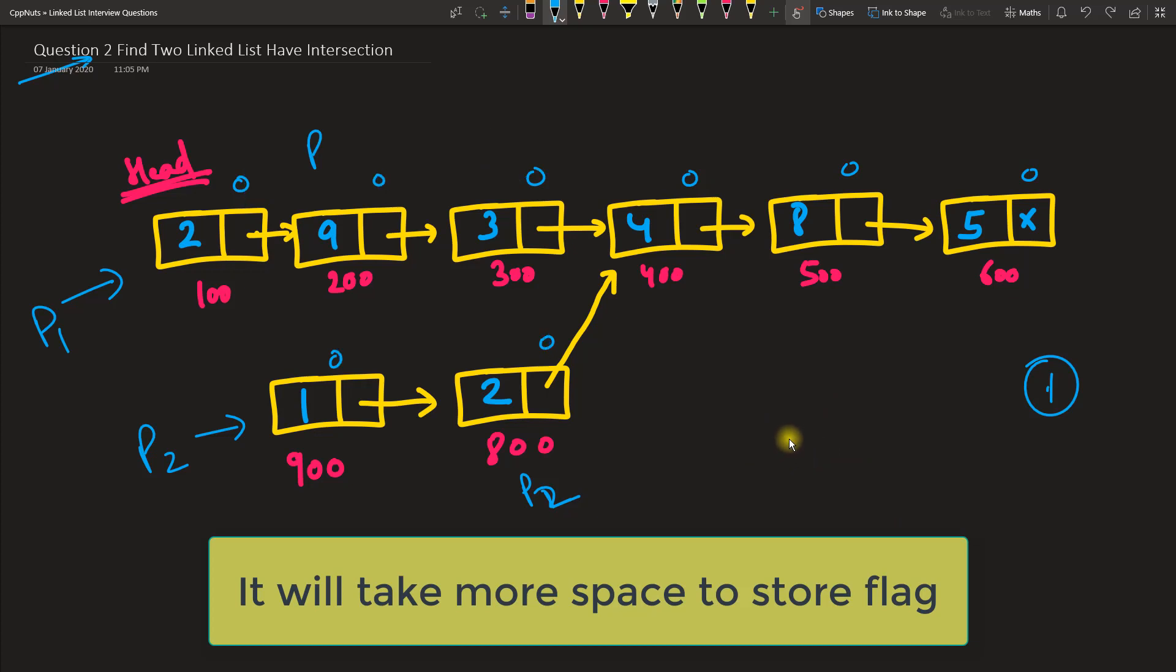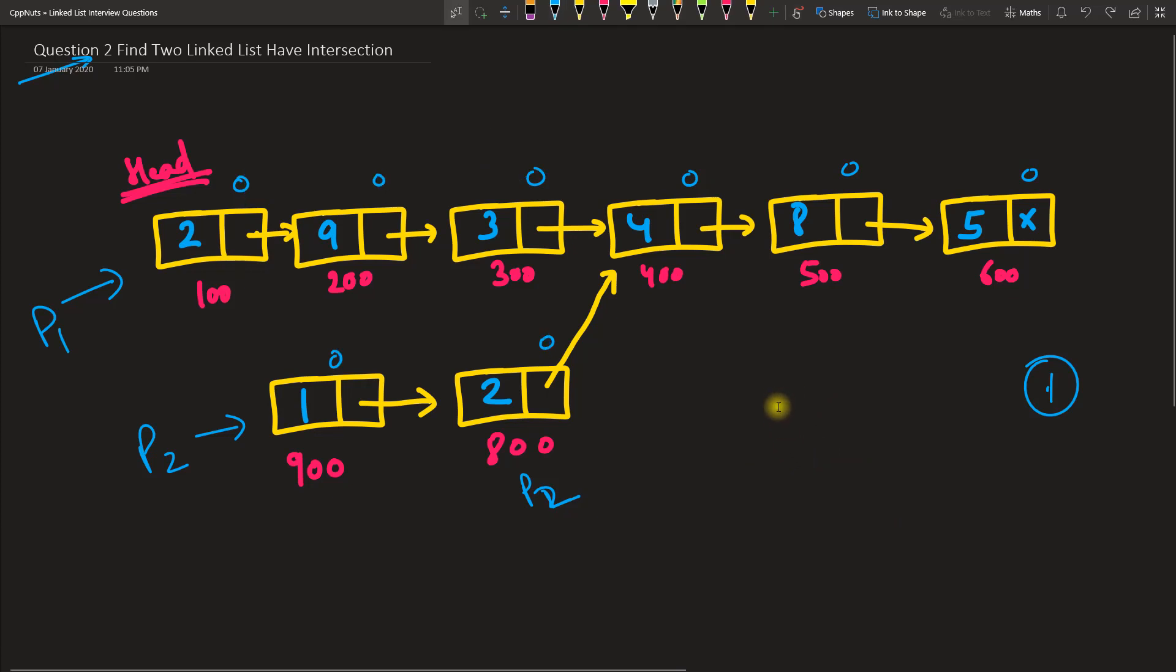There is another solution—lots of people might be saying we can use a map here, but I would say no, map is not a good solution here. First solution was to put a flag. Another solution what I think would be a good solution is to traverse one list at a time.